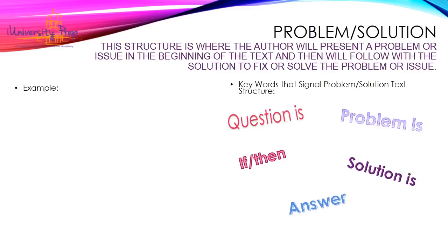The first one is problem and solution. This structure is where the author will present a problem or issue in the beginning of the text and then follow with the solution to fix or solve the problem or issue. Here are some key words to look for in a problem-solution text. You might see words such as: the question is, the problem is, if this then what, the solution is, or they might even use the answer. Let's look at an example and see which of these signal words could key us in that this is a problem-solution.